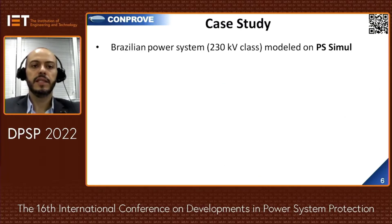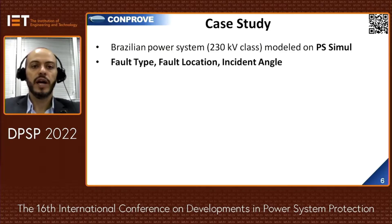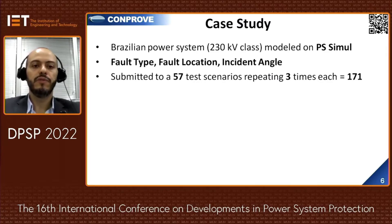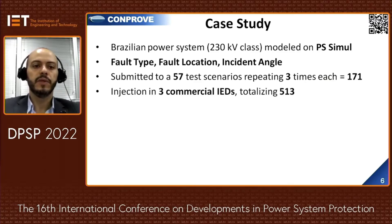The case study: a Brazilian power system at 230 kV was modeled in the software, varying fault type, fault location, and incident angle. Fifty-seven test scenarios were defined, each repeated three times, adding up to 171 tests. The same tests were performed on three commercial IEDs, totaling 513 tests.